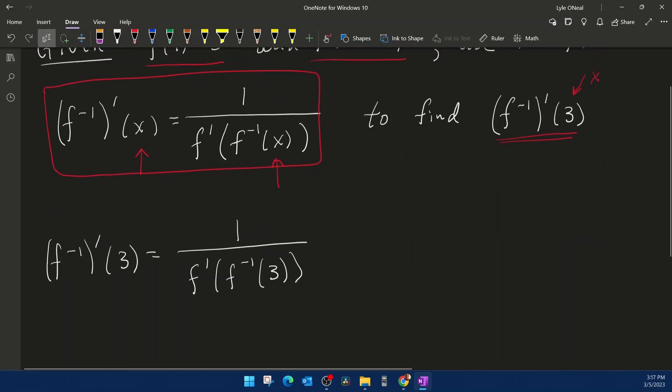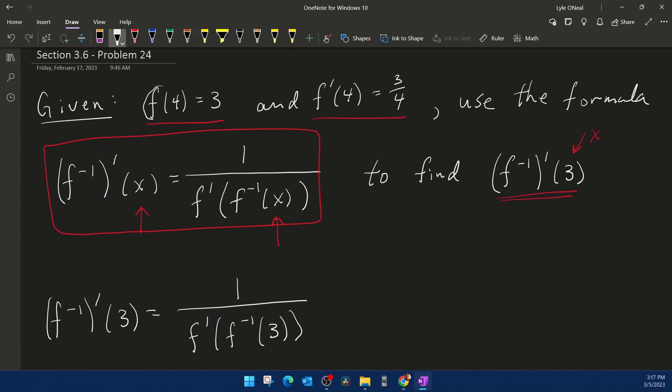Now then, we're going to use this fact right here that f of 4 is 3 and what we know about inverses to figure out what to plug in. So if f of 4 is 3, then the 4 would be the domain of f and the 3 would be the range of f.